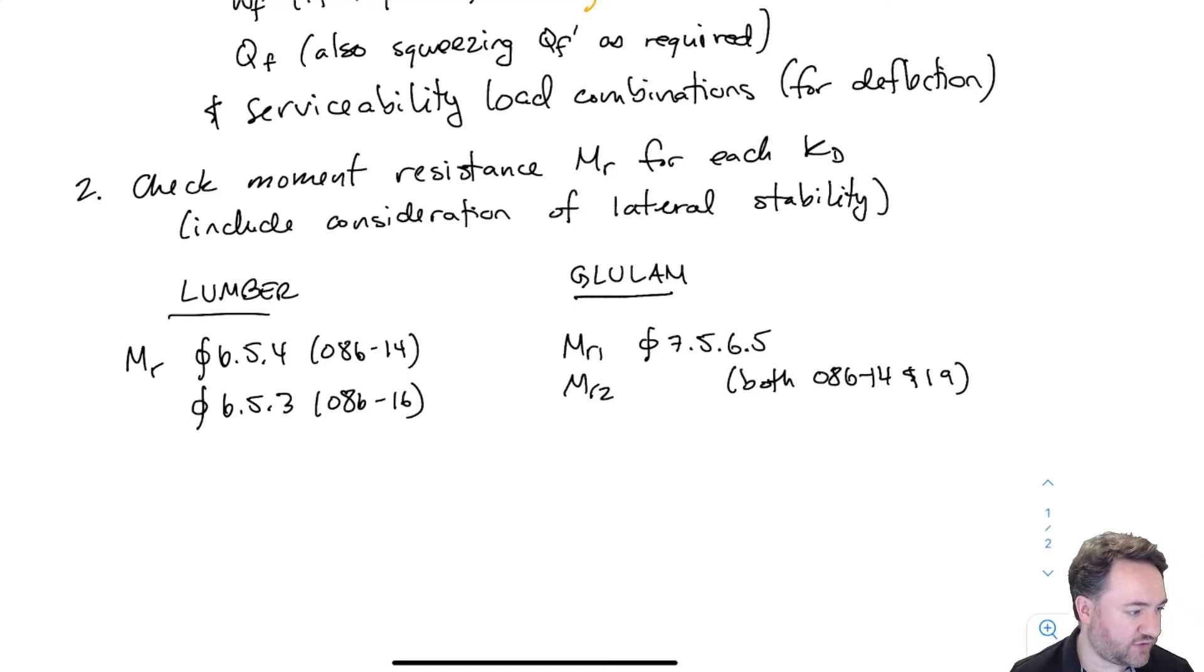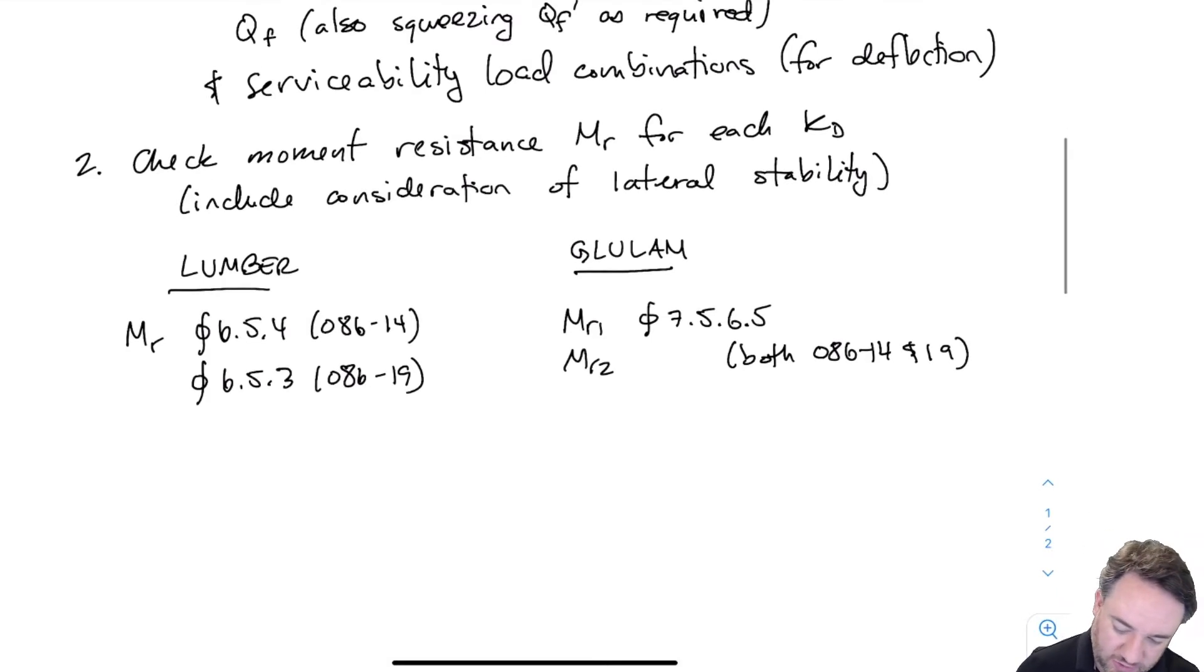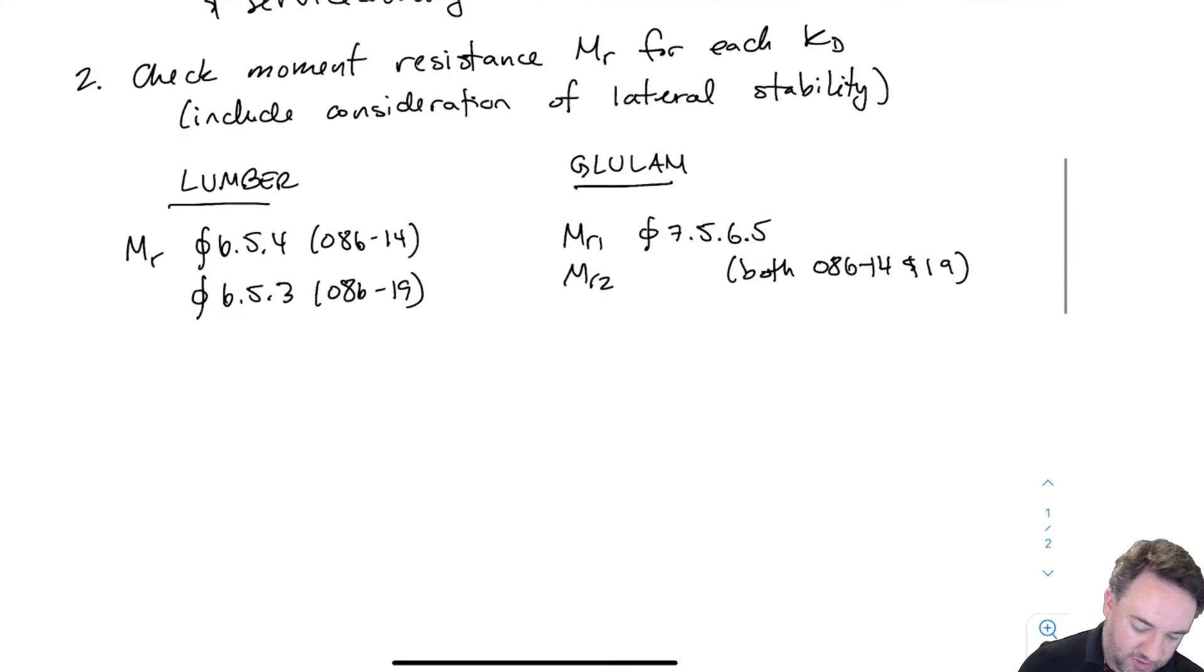6.5.4 and 6.5.3 for 086-14 and 19 for the MR check. And then MR1 and MR2 are both in the same clause 7.5.6.5, which is the same for both 086-14 and the newer version 086-19.